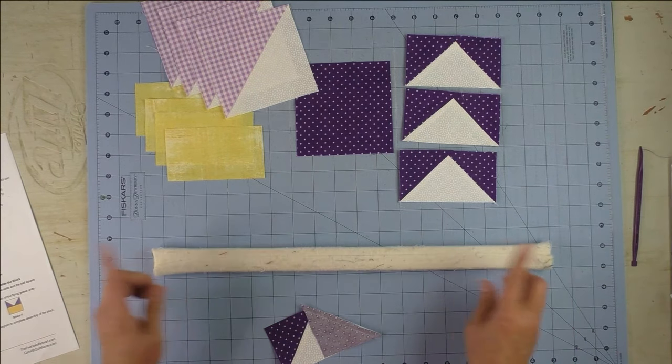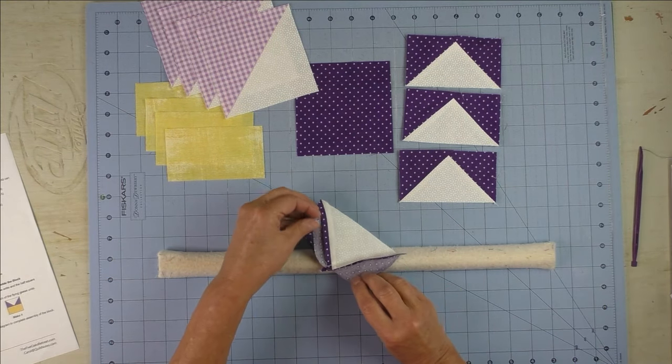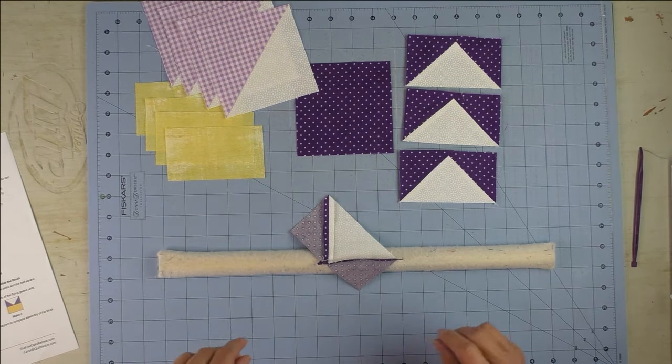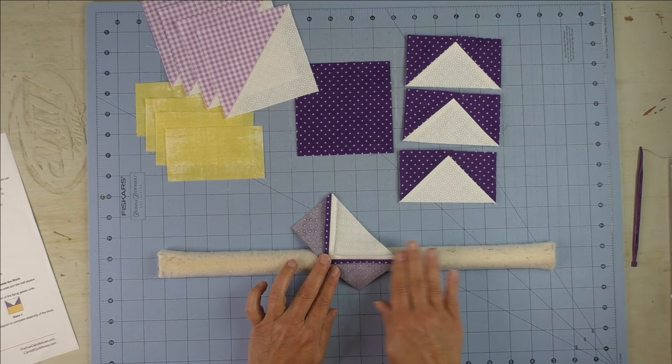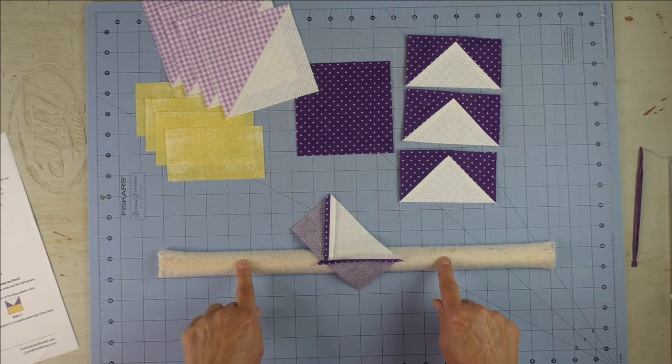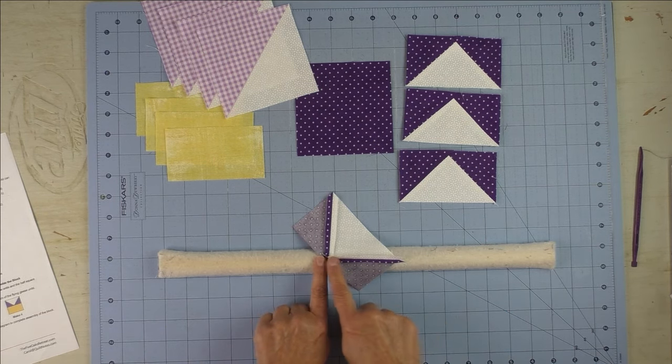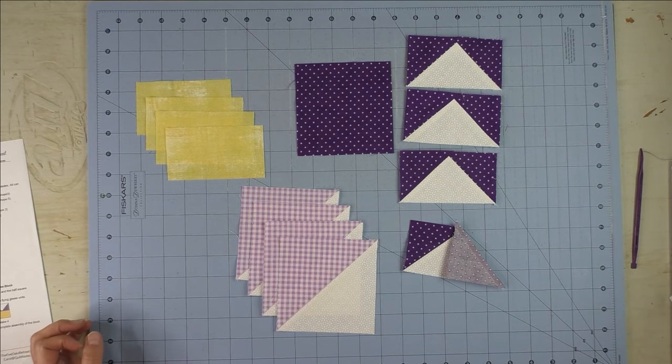What you do with this is you just lay your seam on top of it and it helps to open it up a little bit, and then you just press with your iron right on top of it. That's a little trick and it's really helped me, especially with these small ones, to press the seams open. Now let's continue to piece the block.